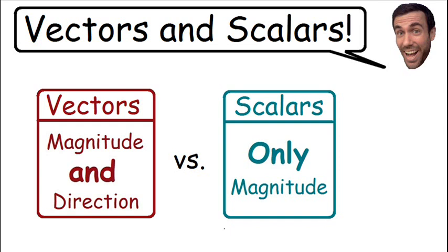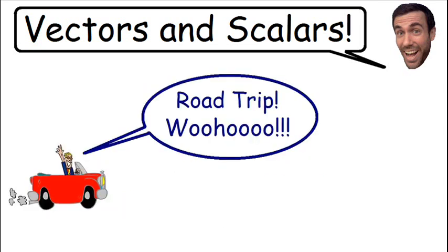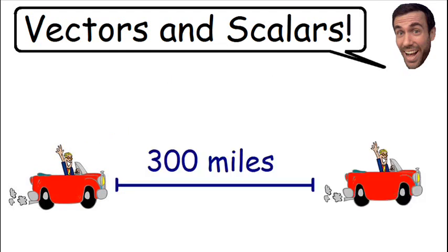This is because a scalar quantity only has a magnitude. So let me show you some real life examples and I think this will all make a lot more sense. Now for our first example let's say we are going on a road trip. And during this road trip we travel a distance of 300 miles.